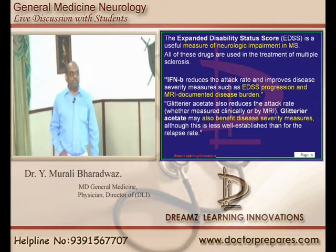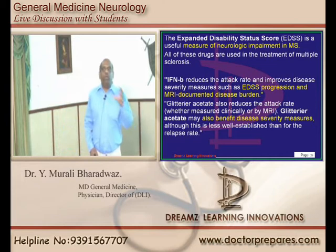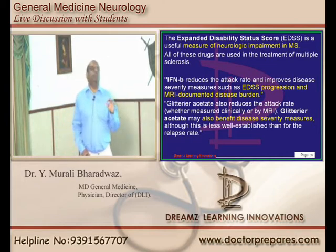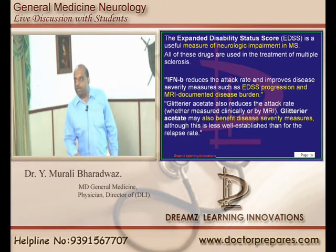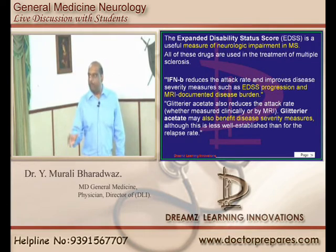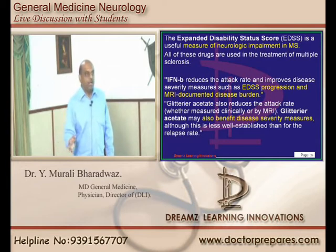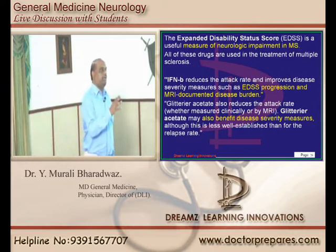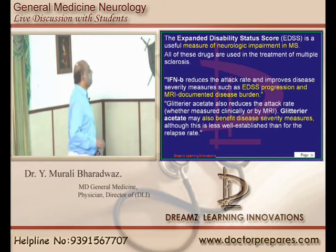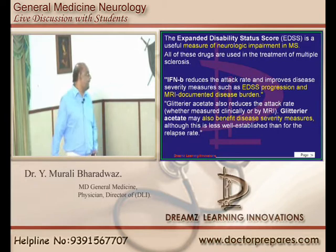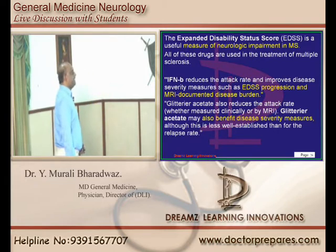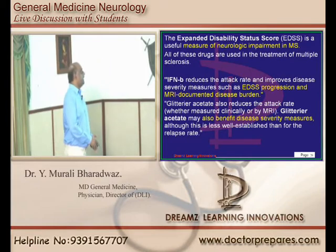How do you calculate the disease burden of multiple sclerosis on MRI? Multiple sclerosis leads to demyelinating plaques; based on the number and severity of these plaques, we calculate the disease load on MRI, and this is also decreased by interferon beta. Similarly, glatiramer acetate is another important drug also known to benefit the disease severity scoring.